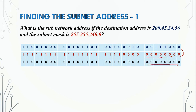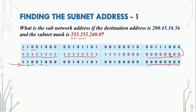After performing the AND operation on each block, we get the subnetwork address. This subnetwork address is the result — the first block uses 255.255, and we apply all 1s where the mask is 255, giving us the final destination subnetwork address.